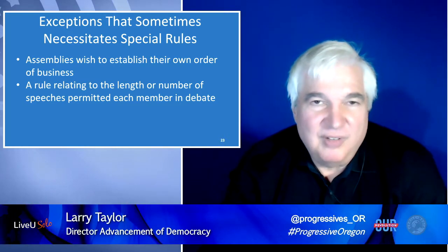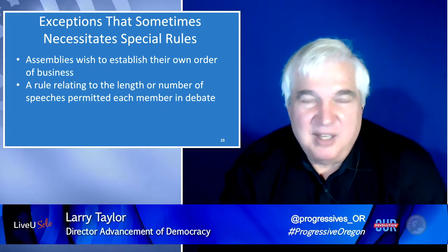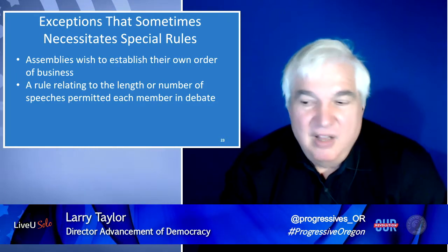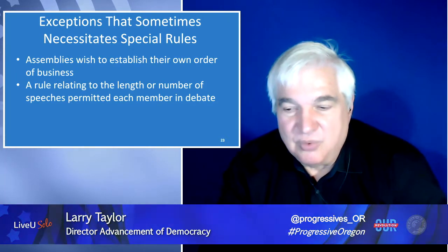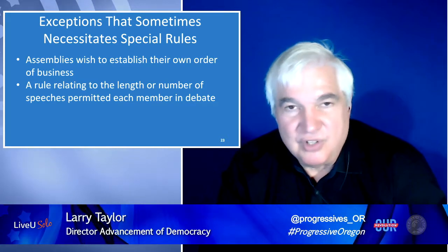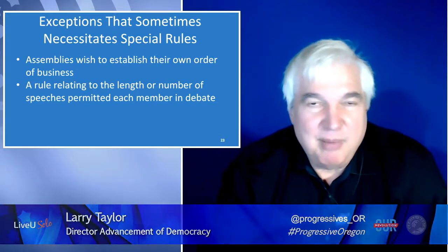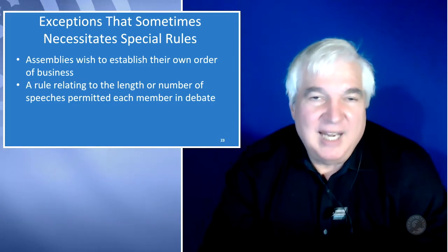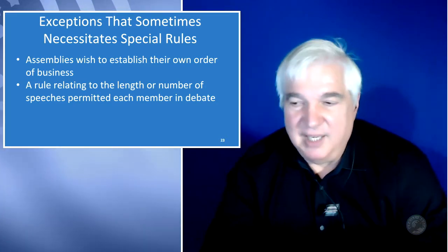So if you have an entire membership of a thousand people and typically only 75 show up for a meeting, to pass a special rule it would either require previous notice and a two-thirds vote of those attending, or a majority of the entire membership — which, if 900 people never showed up to meetings, would be very hard to attain.